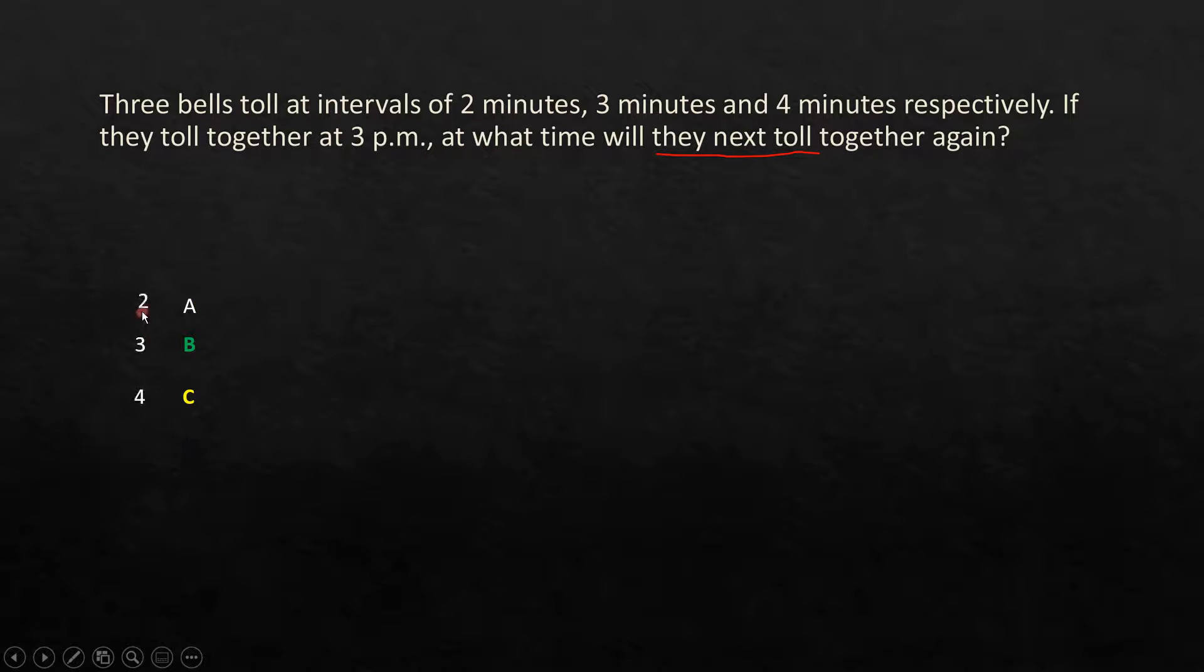And we know that A tolls every 2 minutes, B tolls every 3 minutes, and C tolls every 4 minutes. So, let's say at 3 o'clock, 3 p.m., all the three bells toll, so ring, right? And bell A will actually ring after 2 minutes, because it's every 2 minutes, it's supposed to ring. So, again, after 4, and then 6, 8, 10, 12, 14, it goes in multiples of 2. So, these are the times when the bell A rings.